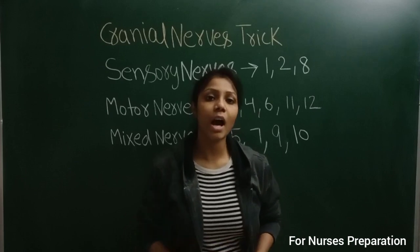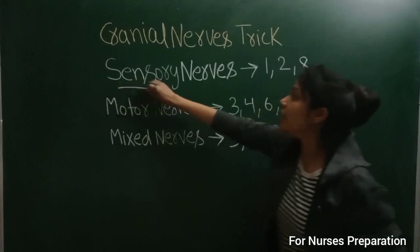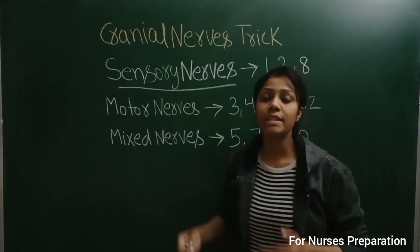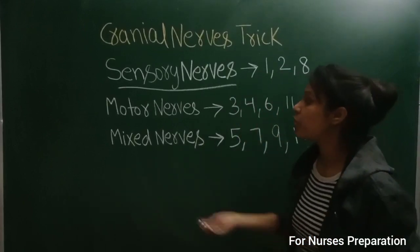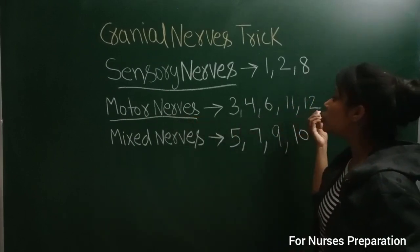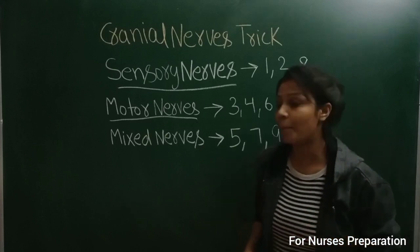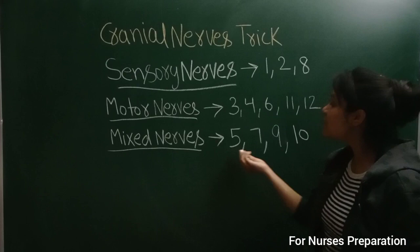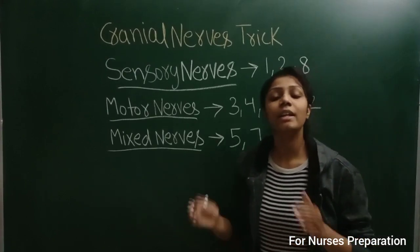Let's check out cranial nerve tricks. Sensory nerves are 1, 2, 8. Motor nerves are 3, 4, 6, 11, 12. Mixed nerves are 5, 7, 9, 10.